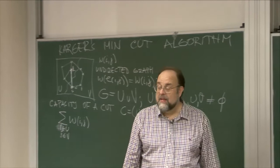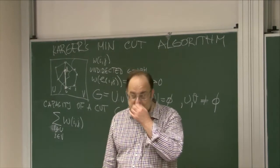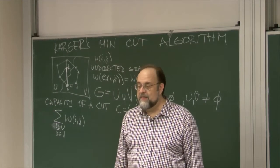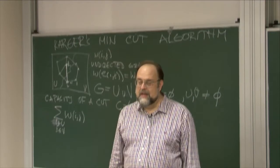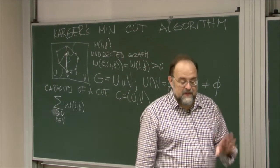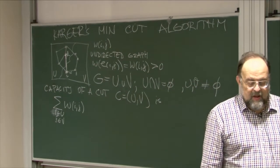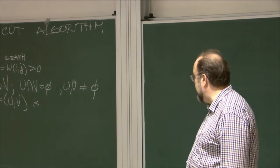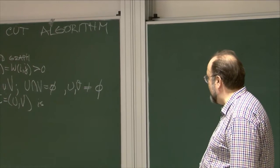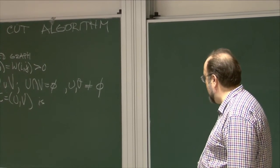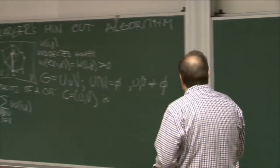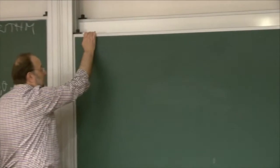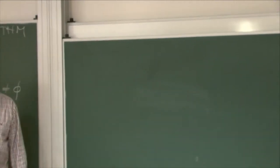The basic idea is extraordinarily simple, but just how you build the whole algorithm from that basic idea is actually really sophisticated and tricky. It's an ideal example of a probability boosting method that applies to other problems as well. The basic operation we will use is collapsing edges.